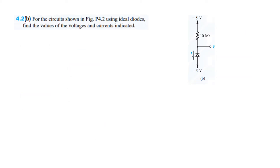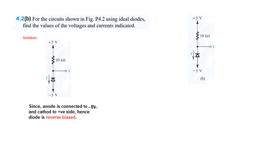Now let's see part B. From the circuit you can see that the cathode is connected to the positive side and the anode is connected to the negative side, therefore this diode will be reverse biased — shown as an open circuit — and so the current flow will be zero, I is zero. Taking KVL around the loop: 5 equals I times 10K plus V. But I is zero, so the first term becomes zero, and therefore V equals 5 volt.